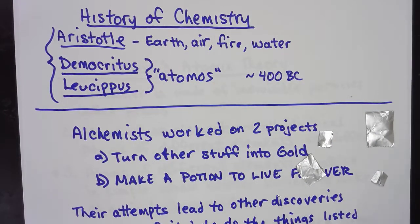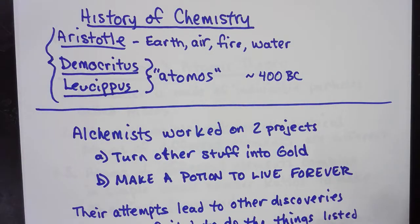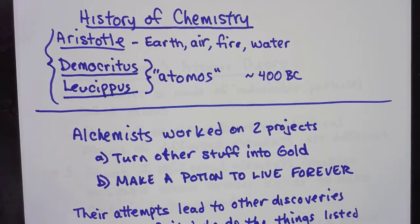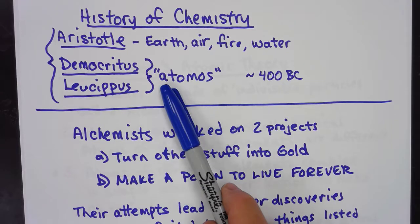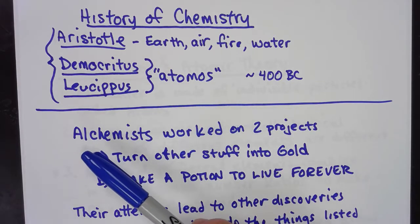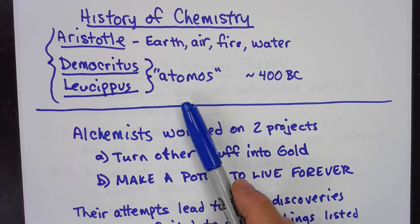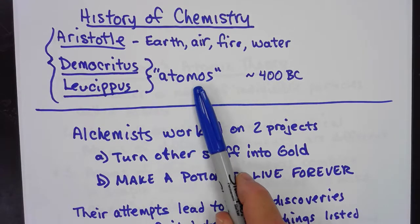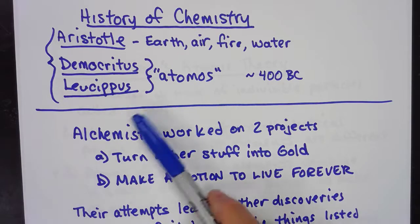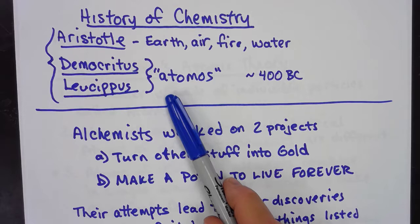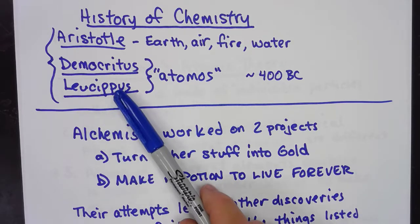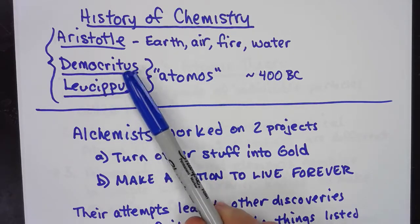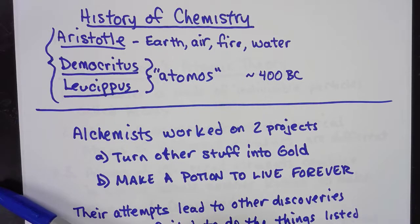And there would come a point where, if we cut it one more time, it would no longer be aluminum. And at that point, we're going to call it uncuttable. Now, the Greek word for uncuttable is atomos. And so that's what they decided that the smallest pieces of an element were, were atomos, uncuttables. Aristotle's fan club thought that what Democritus and Leucippus came up with was quite crazy, and so they were made fun of and laughed at for many years, while Aristotle's idea continued to carry the day.